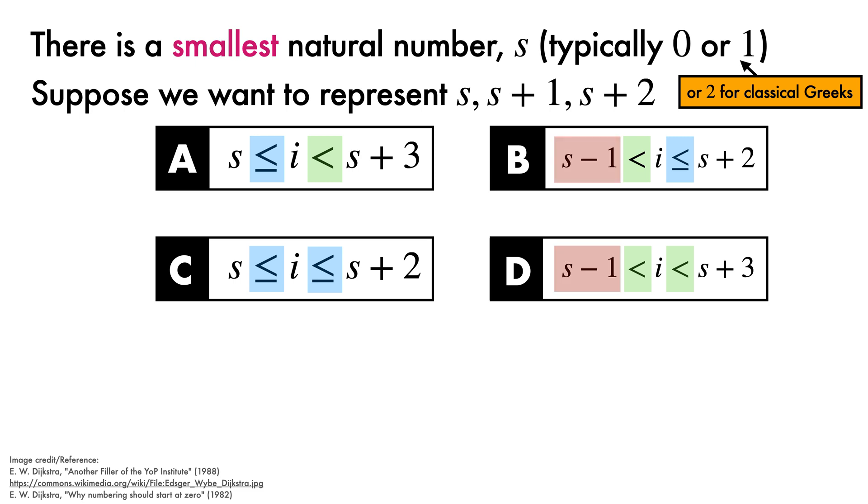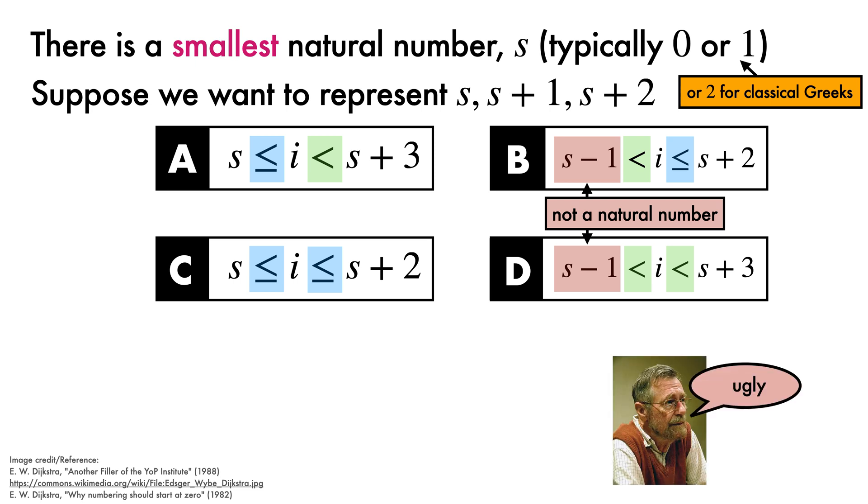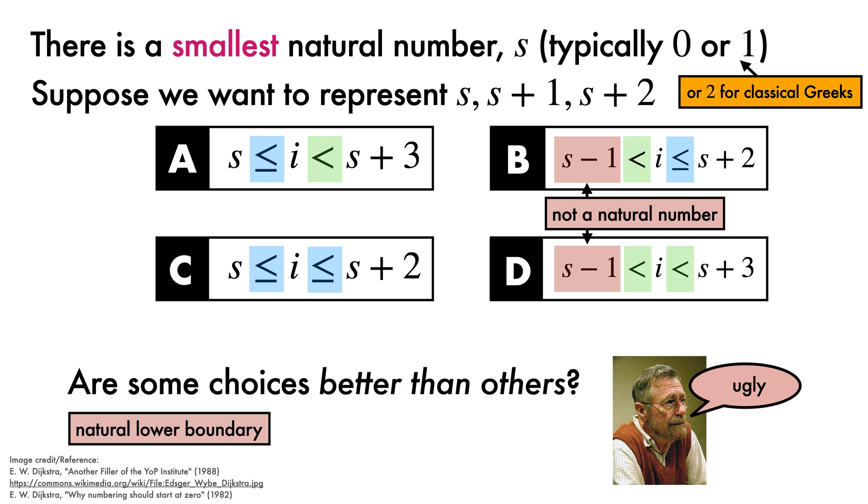Let's consider our four options with the same structure of inequalities that we looked at previously. For options B and D, the lower bound of the interval is now S minus 1. Since S is the smallest natural number, S minus 1 is not a natural number. This need to use an unnatural number to specify a range of natural numbers is ugly in Dijkstra's view. So when it comes to writing intervals with natural lower boundaries, A and C are superior to B and D.